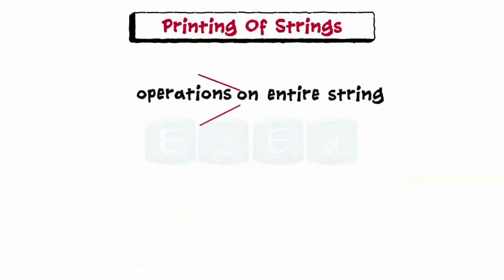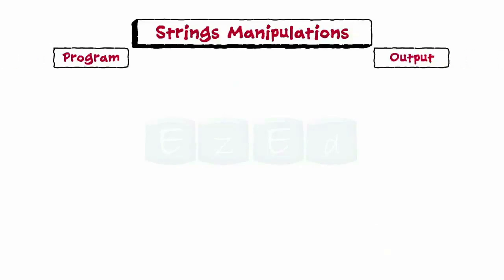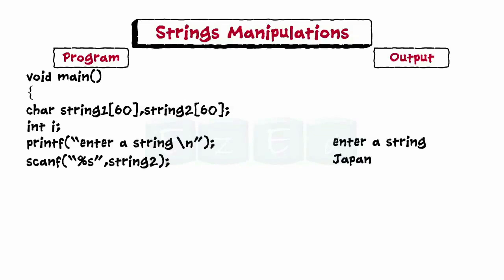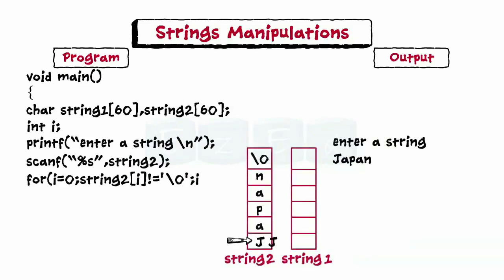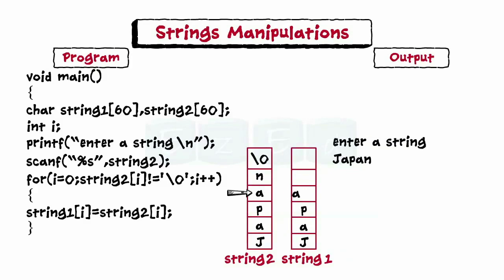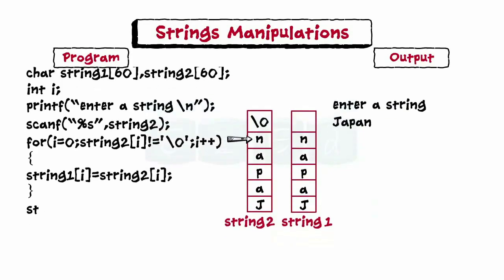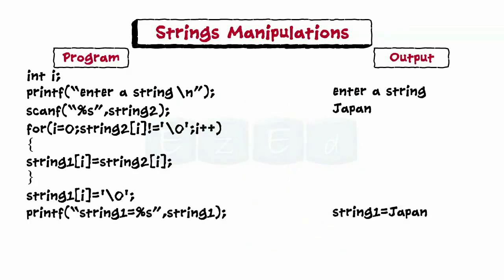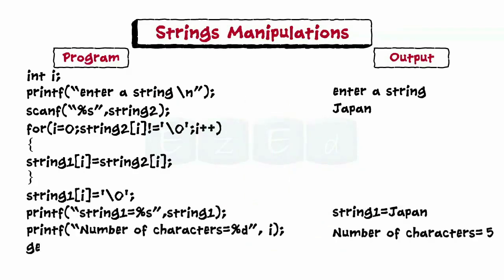C does not allow operations on strings directly — operations can be performed on a string on a character-by-character basis. For example, a program to copy one string to another and count the number of characters uses a for loop to copy string 2 to string 1 character by character, then terminates the string with a null character and prints both strings. The count of characters is kept using the counter variable i.